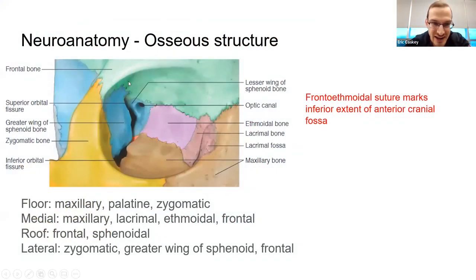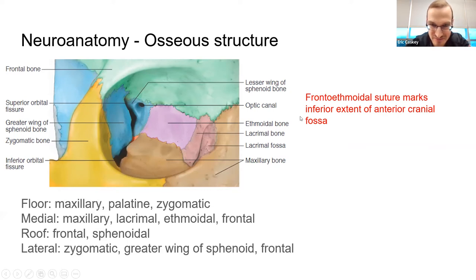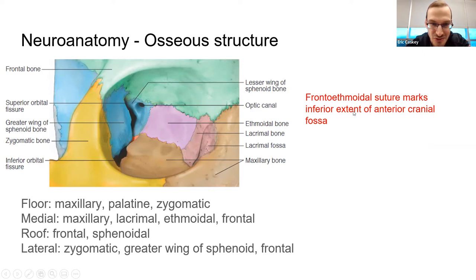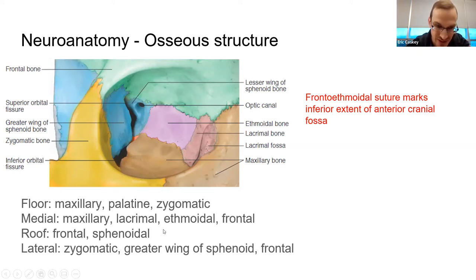This is a right orbit. They frequently ask about what borders the optic canal or the superior orbital fissure, so you want to be thinking of your sphenoid bones. One little tidbit is that the frontoethmoidal suture marks the inferior extent of the anterior cranial fossa — if you go above that line and through the bone, you'll be intracranial. It's a surgical landmark. They also like to ask about the bones of the orbit, and there are lots of mnemonics out there for those.